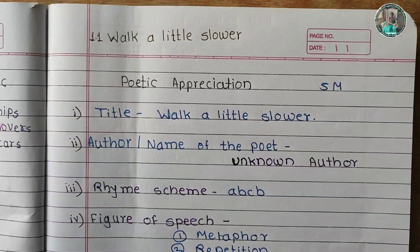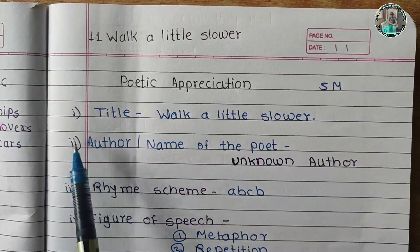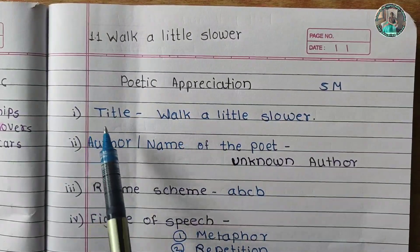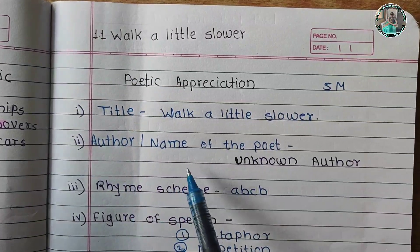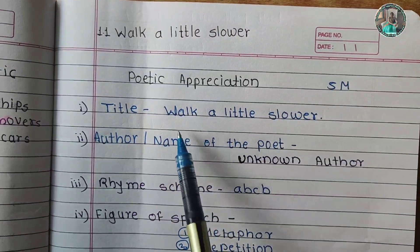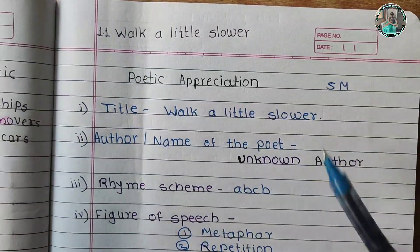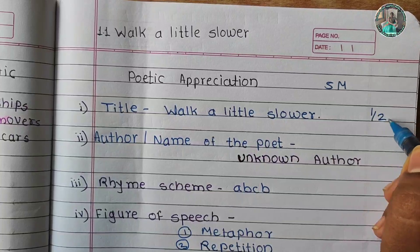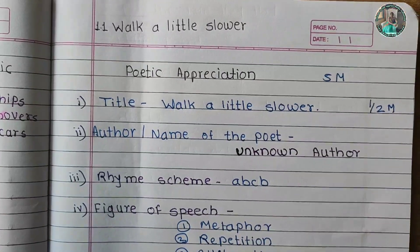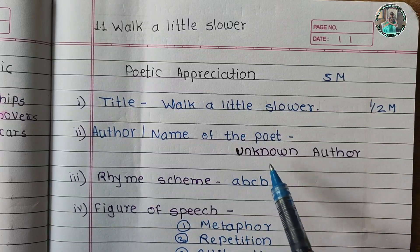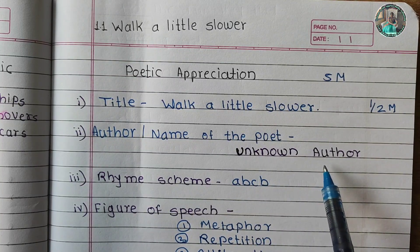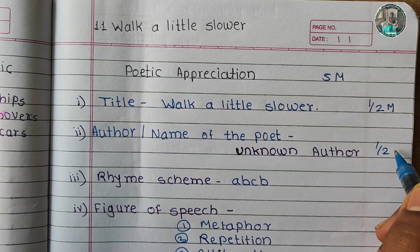Poetic appreciation madhe saghat pahila 'title' asa. Jai kavitela dilelay te title aapadhyan jase chetase utarve — 'Walk a Little Slower.' Yala aapalya milnar arth half marks. Author kiva name of the poet — jeva name of the poet dilelay naste toh tela 'unknown author' asa mhanun dya. Yala asana arth half marks.